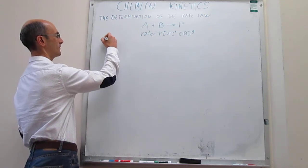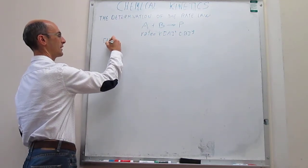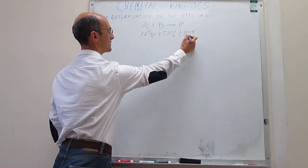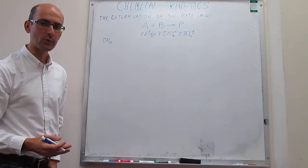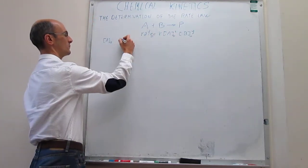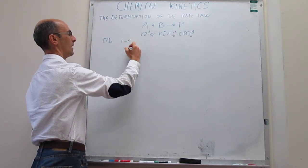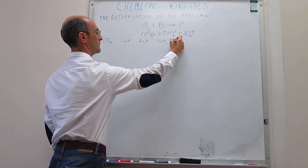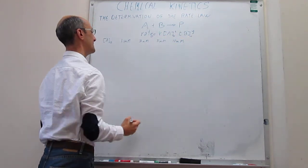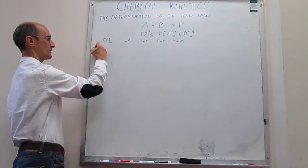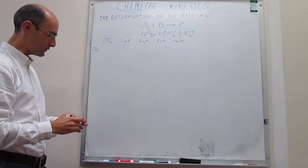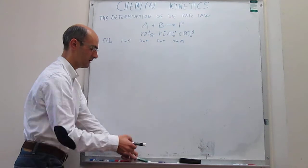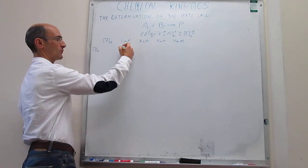Suppose that we have a grid of experiments in which we're going to be determining the initial rate. All of these would use initial concentrations and initial rate because that gives more accurate results. We do this experiment with one millimolar of A, then maybe three millimolar, five millimolar, and then ten millimolar. We also have to choose a concentration of B. The idea is to measure these rates — for the purpose of this problem we're just going to make up these numbers.